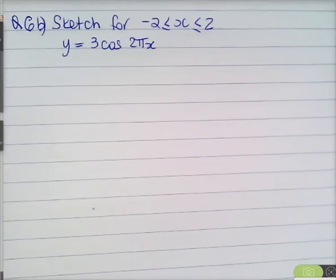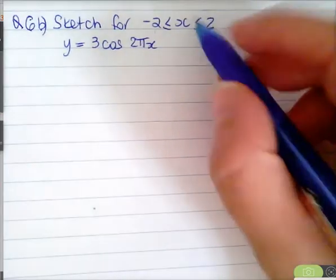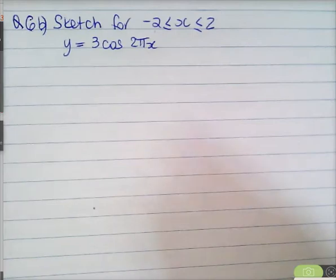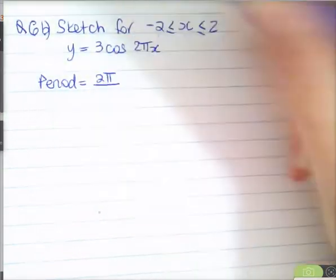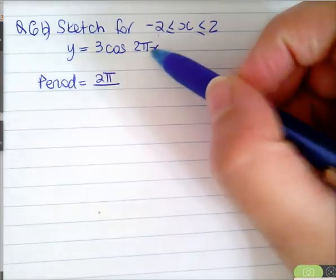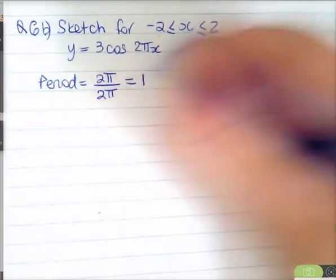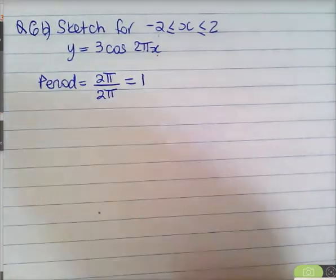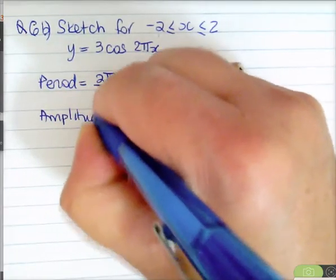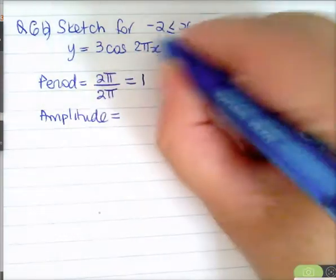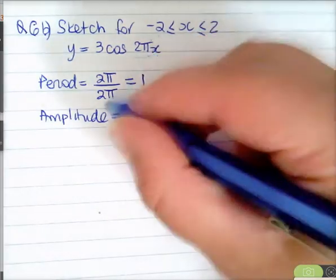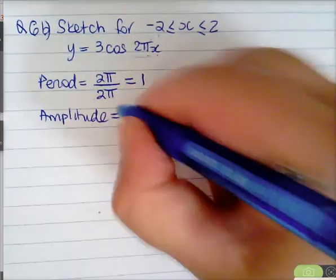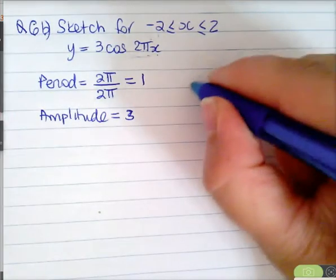This is a bit different — you're used to seeing 0 to 2π or negative π to π. The reason is because of the period. Our period is 2π over the coefficient of x, and the coefficient of x is 2π, so the period is actually 1. The amplitude of the curve — remember period is 2π over b, in this case b is 2π — the amplitude is 3. So this is basically a cosine curve.